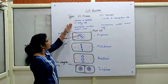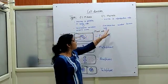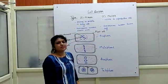In mitosis, the chromosome number in the cell remains the same, whereas in meiosis, the chromosome number becomes half.